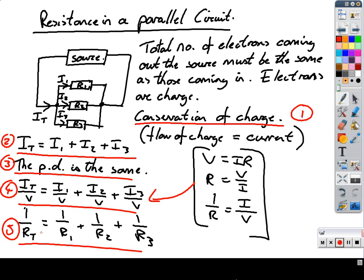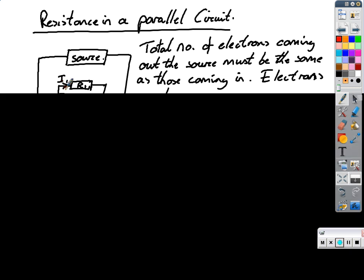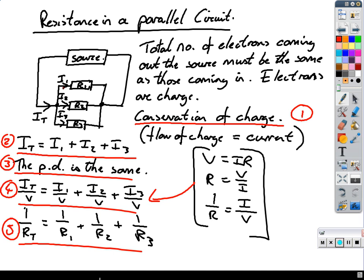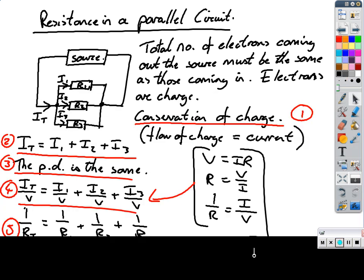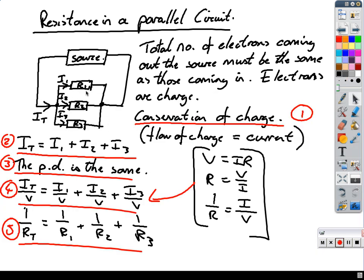Therefore, we're going to use conservation of charge, which is conservation of current. If it's conservation of charge, the total current must be equal to the current through one plus the current through two plus the current through three. This conservation of charge. The current going through this must be equal to the current through this plus the current through this, which must be the total current. The potential difference across each of the branches is the same.